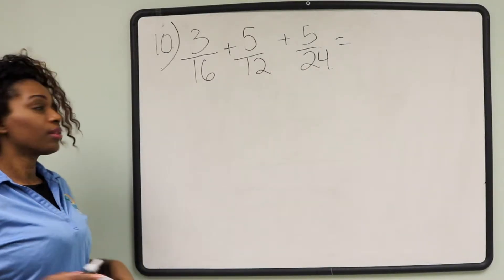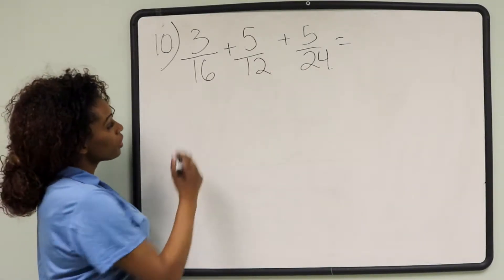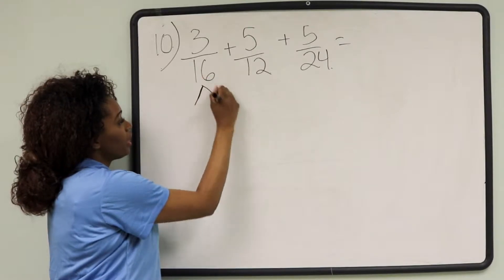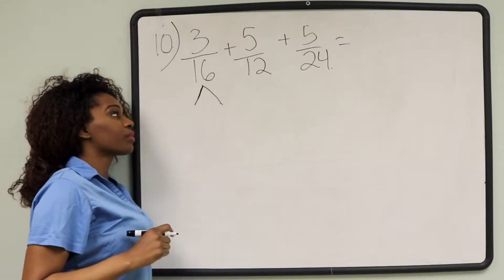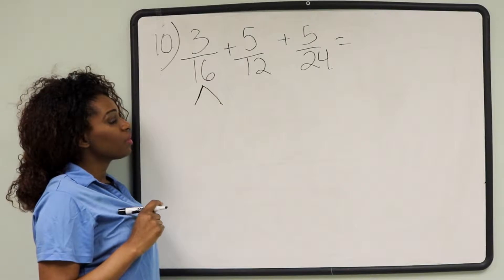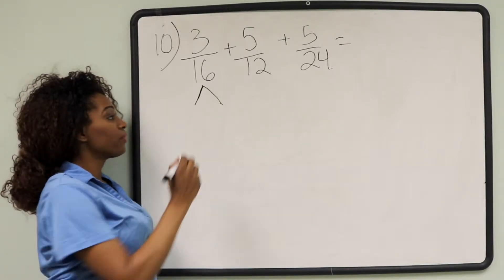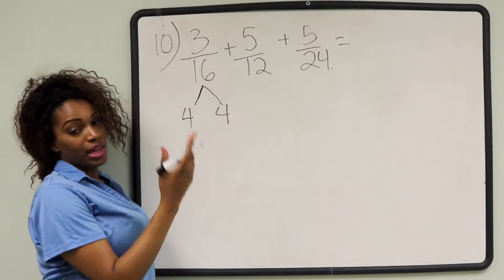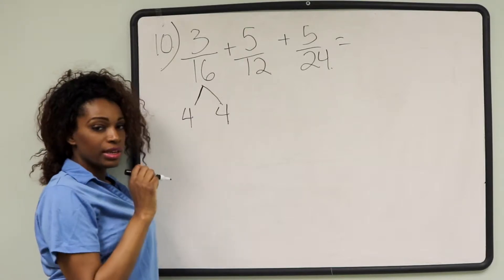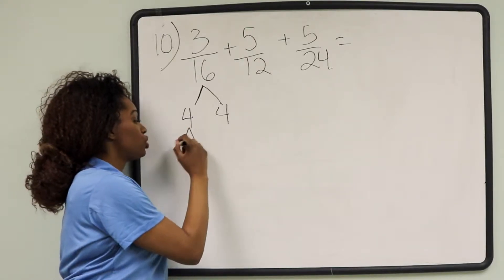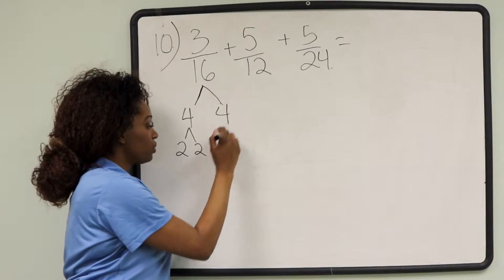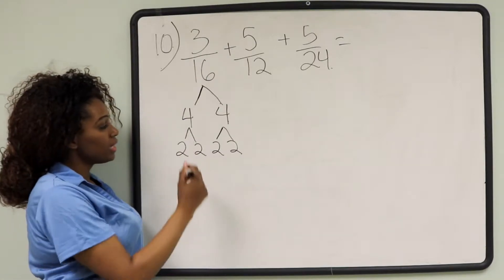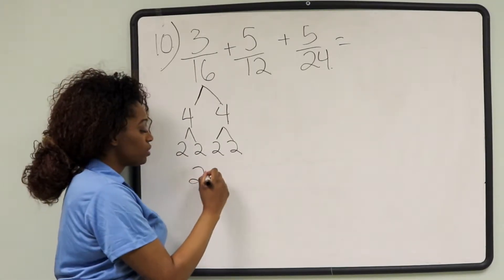In order to do that, we're going to factor. We're going to first factor 16. I'm going to create a factor tree here. What times what gives us 16? 4 and 4, right? Or you can also have 8 and 2. Can 4 and 4 be broken down even further? Yes, it can, to 2 and 2 and 2 and 2. So the prime factorization for 16 is 2 to the 4th power.